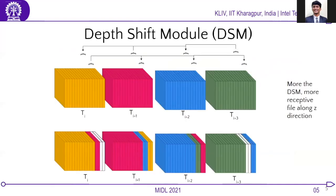For exchange of information, we can have a look at this diagram where some set of channels from one slice are getting exchanged. This shifting of channels is originally derived from the time shifting module, which we have called the depth shifting module here — DSM — since we are referring to 3D volumes and not videos. A part of Ti is exchanged to Ti+1, and a part of Ti+1 is exchanged to Ti and Ti+2. When there is no information that could be passed — for example if Ti−1 is not present — the channels of Ti are zero padded.